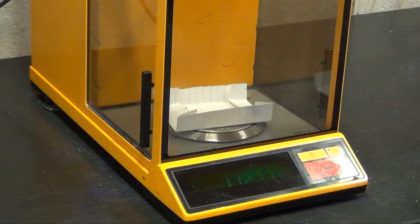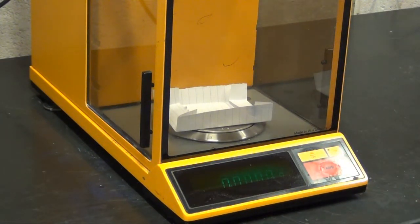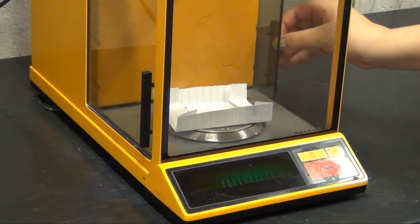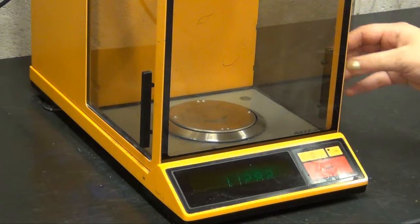You then press the tare button to zero the scale and remove the paper boat, each time shutting the glass door.